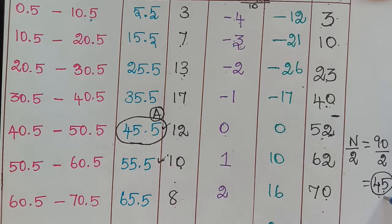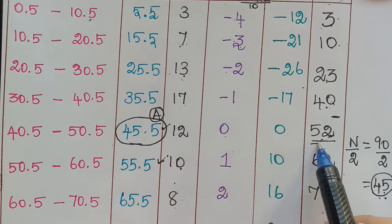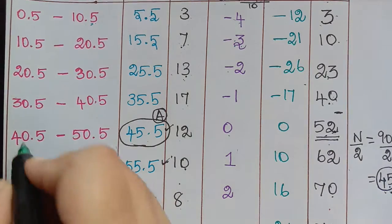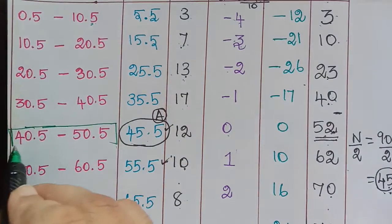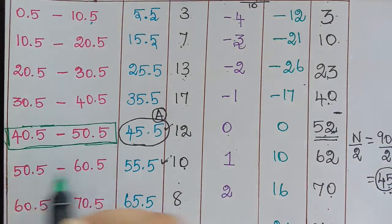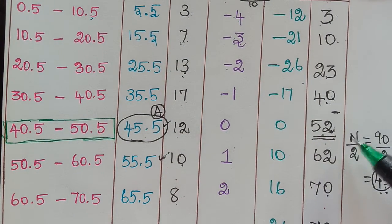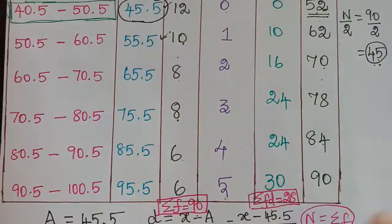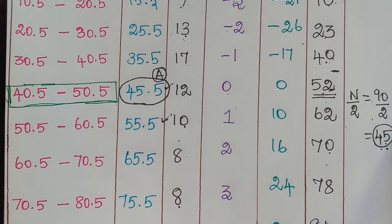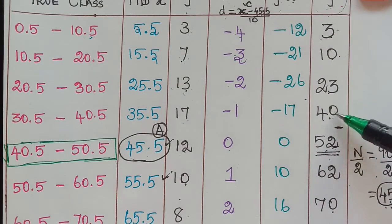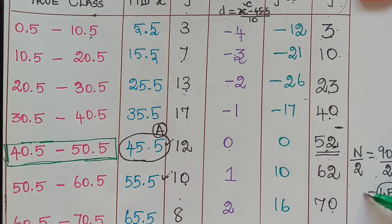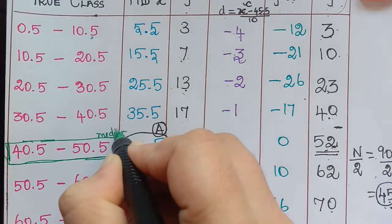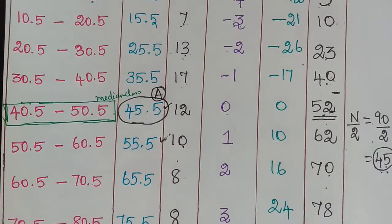Since 45 lies between cumulative frequencies 40 and 52, we choose the value greater than 45, which is 52. The class corresponding to this cumulative frequency of 52 becomes the median class. So n/2 is 45, it lies between 40 and 52, we choose 52, and the corresponding class is the median class.